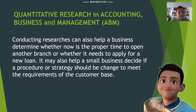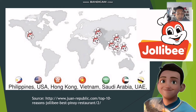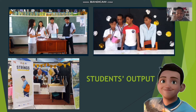Conducting research can also help a business determine whether it is the proper time to open another branch or apply for a new loan, and help a small business decide if a procedure or strategy should be changed to meet customer needs. In business, a feasibility study helps the business owner with decision making. For example, Jollibee is a Filipino fast food chain now well-known in other countries — putting a branch in another country requires studying the culture, people, and environment. The main output of ABM students is to come up with innovative solutions or products that can help improve our way of living.